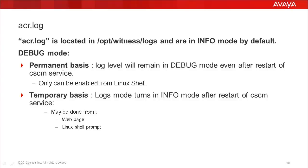Debug mode can be enabled on a permanent basis, where the log label will remain in debug mode even after restart of the CSM service. Whereas on a temporary basis, the log label turns to info mode after restart of CSM service. Temporary enablement of debug mode may be done from a web page or with a command on Linux command prompt.